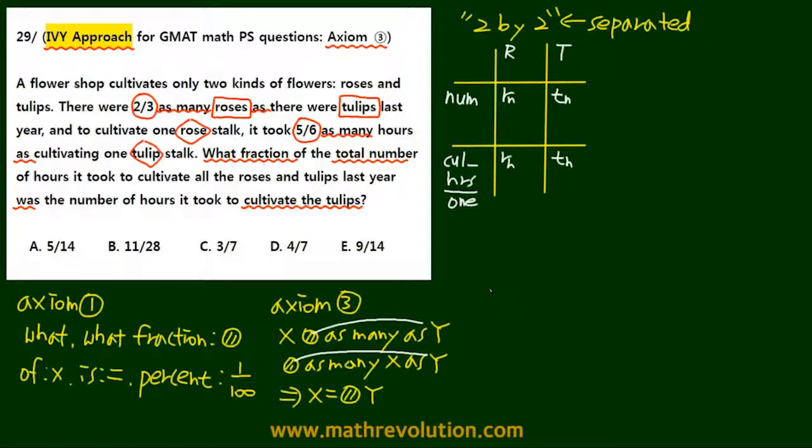So now if we translate the question, we had 2/3 as many roses. So roses was Rn as we defined, as tulips. So tulips was Tn. So using axiom 3, this number 2/3 becomes attached to Tn. So then the equation will become Rn equals 2/3 of Tn.